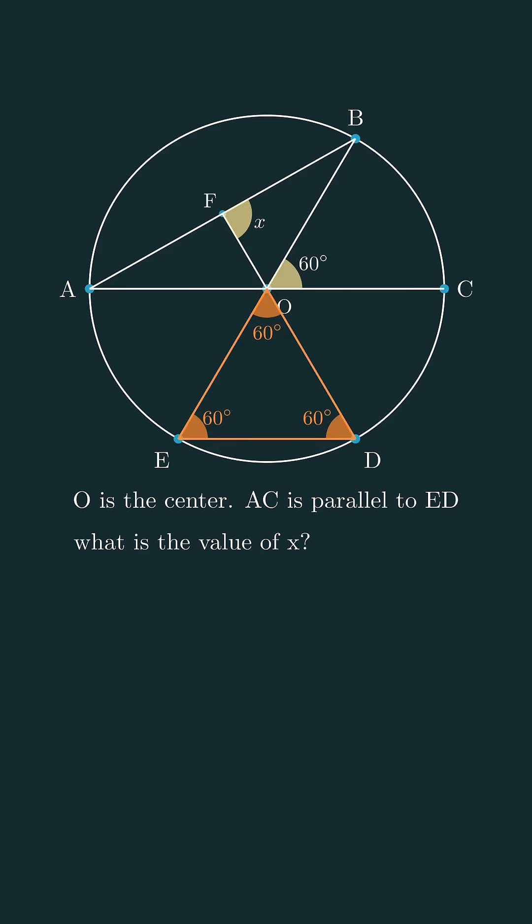Also, FOB is a vertically opposite angle, so it's also 60 degrees. Now, since OB and OA are both radii, they subtend equal angles as well.